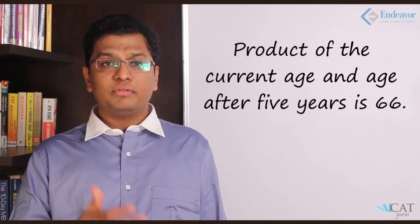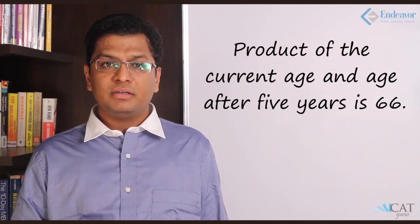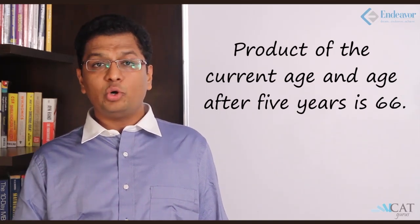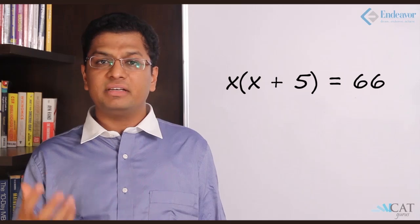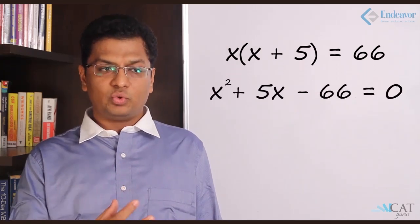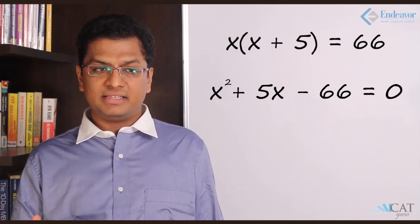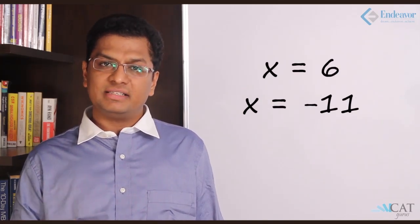Let us look at an example where we can apply what we have learnt. The product of the current age of a person and the age after 5 years is 66. Suppose x is the age of the person right now, so x + 5 is the age after 5 years. x(x + 5) = 66, which turns into x² + 5x - 66 = 0. Solving it we get x = 6 and x = -11.